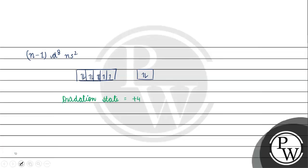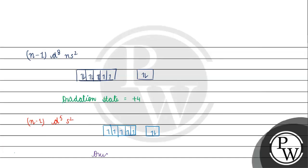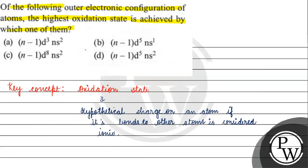For Option D: (n-1)d⁵ns². We have d⁵ giving 5 electrons and ns² giving 2, so 7 electrons total. In this case, the oxidation state we can achieve is plus 7. Coming back to the question, the correct answer is Option B. I hope you understood it well. Thank you and all the best!